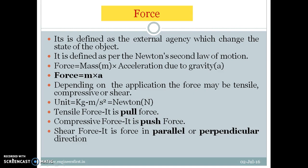The next important term is force. The external agency which changes the state of an object is called force. It has been derived from Newton's second law of motion. Force is the product of mass into acceleration, so force equals M into A. Depending on the application, the force may be tensile, compressive, or shear — meaning it may act along or perpendicular to a direction. The unit of mass is kg and the unit of acceleration due to gravity is m/s squared, so the unit of force is Newton. This is one of the basic fundamental terms very frequently occurring in the study of Strength of Materials.